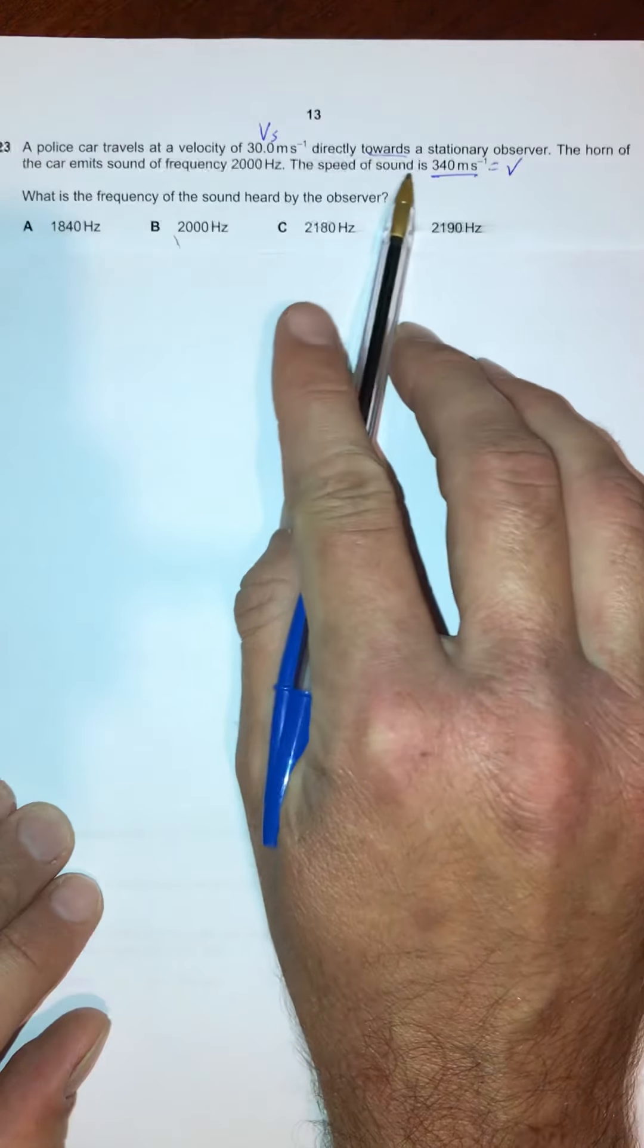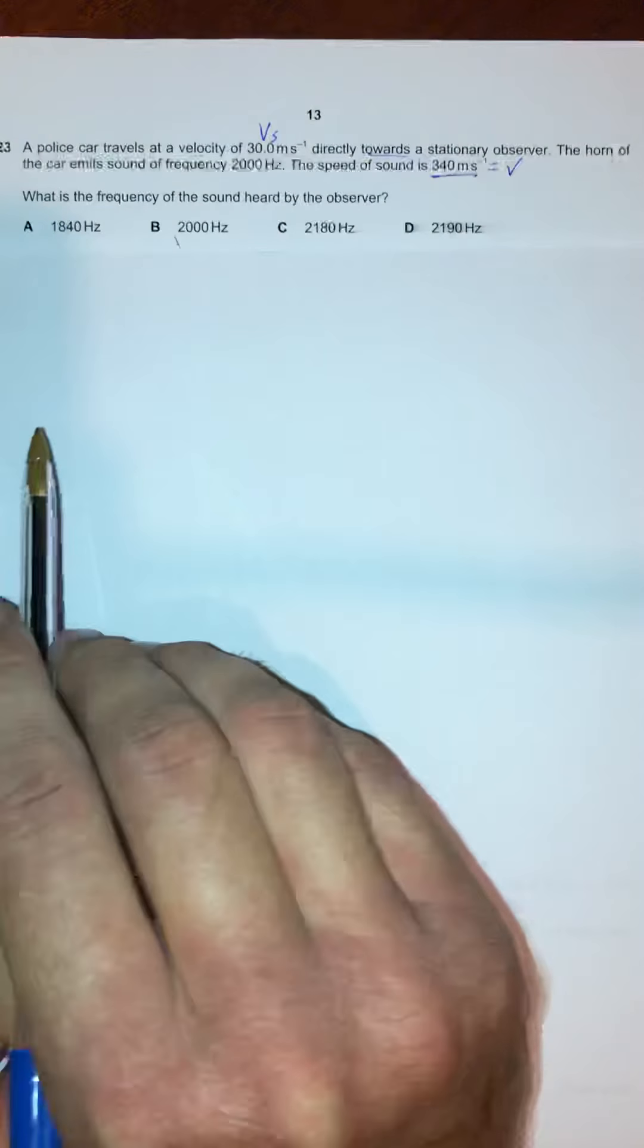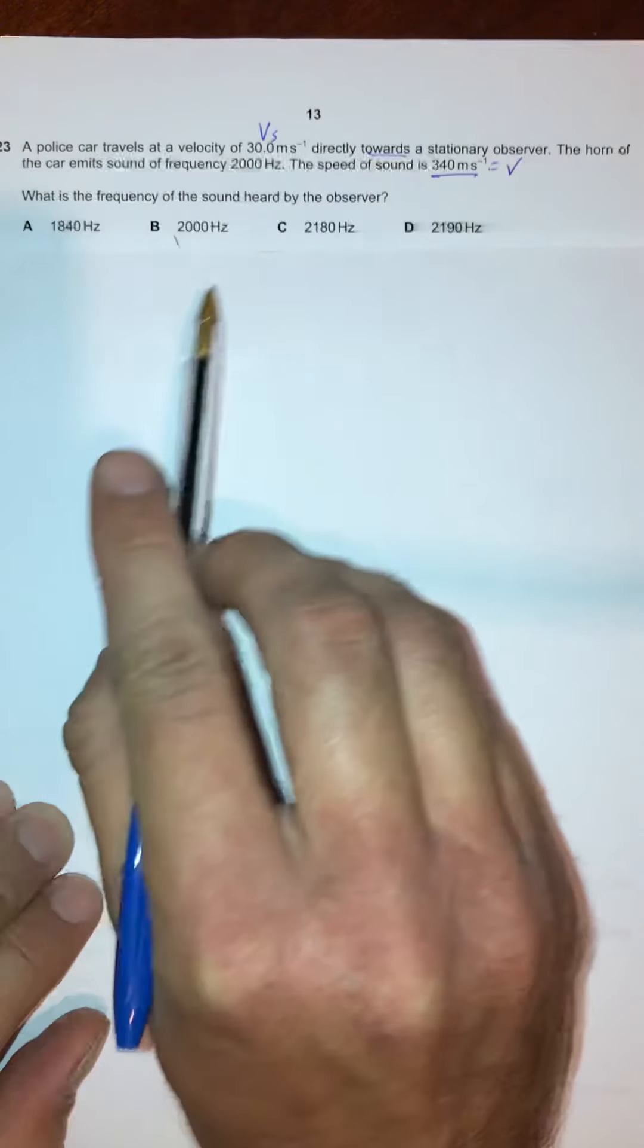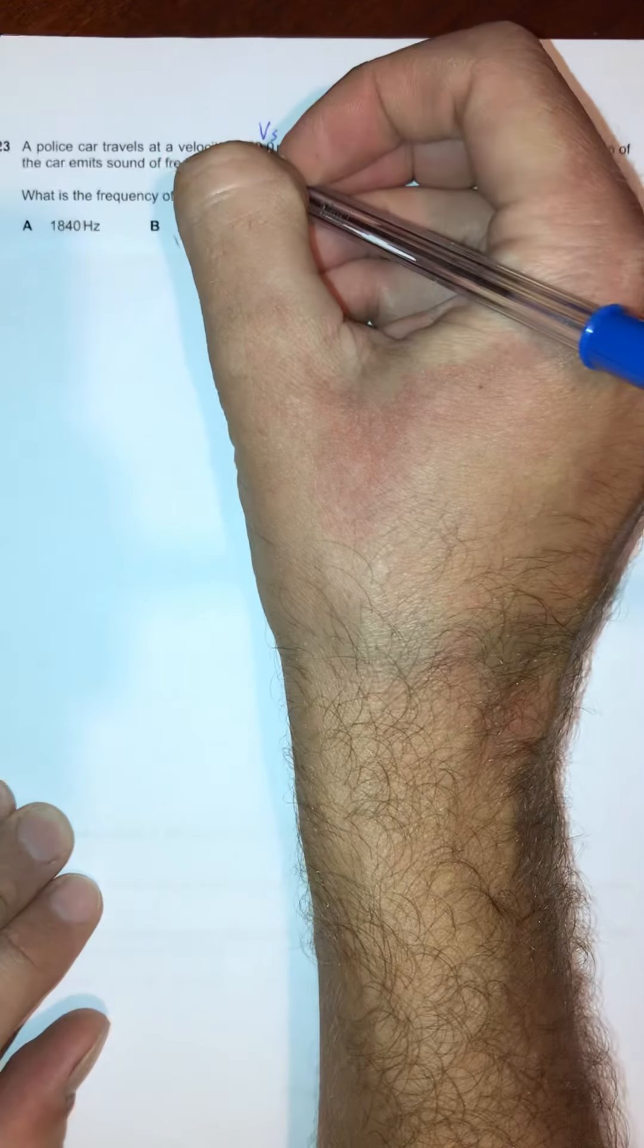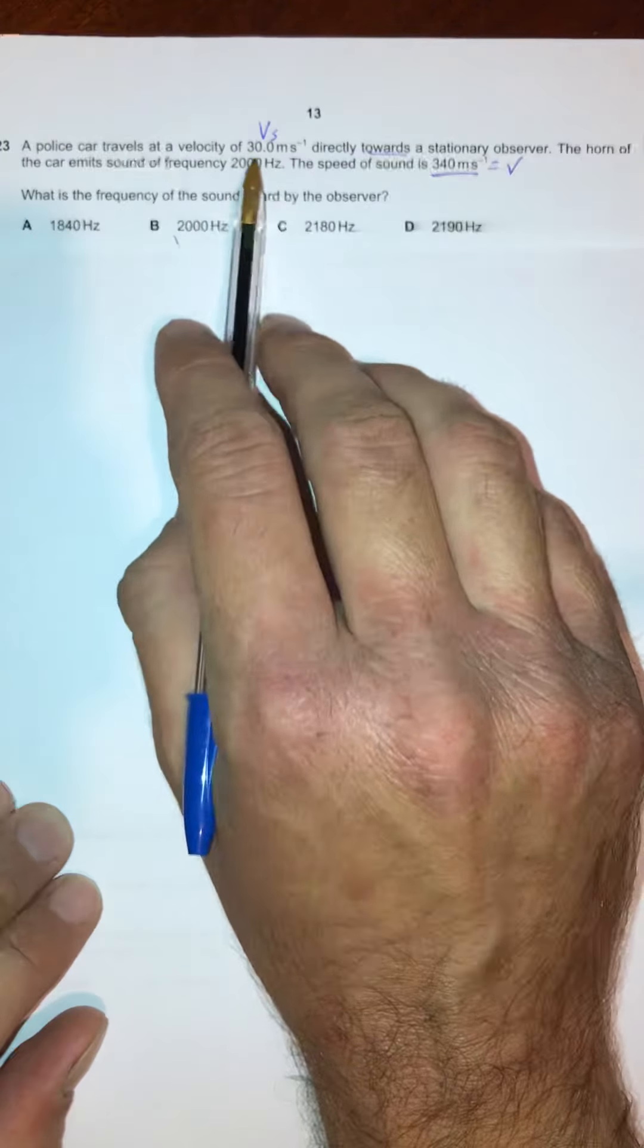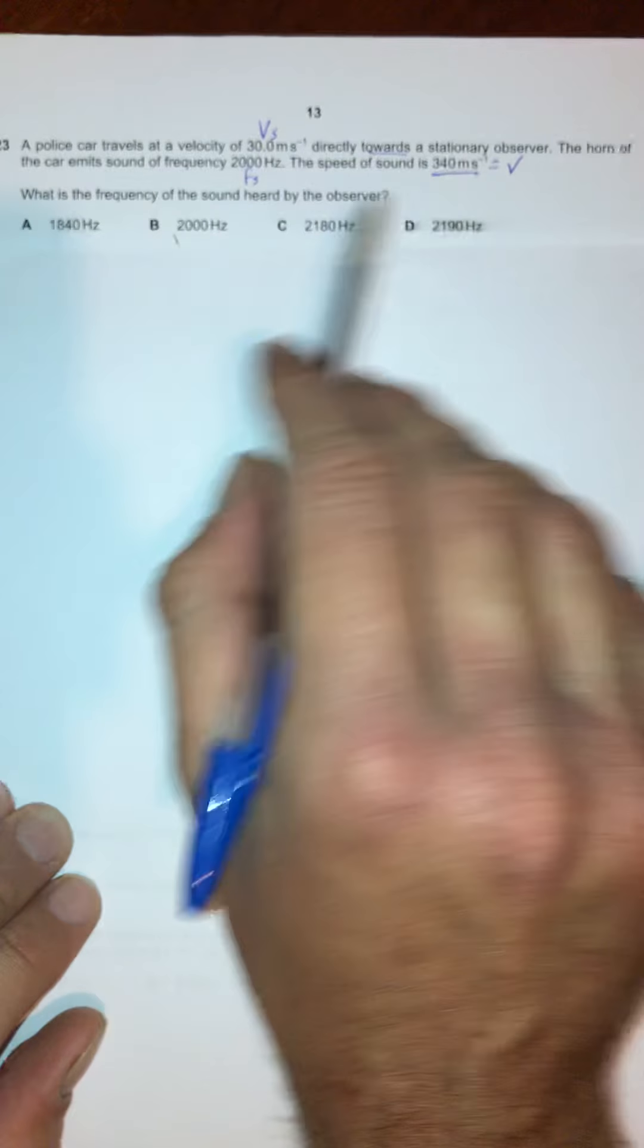The velocity of the wave, it's a sound wave, and so V is the speed of sound, 340 meters per second. The car emits sound of frequency 2,000 hertz, and so that's the frequency of the source. If you were right there with the horn of the car, it would sound 2,000 hertz.